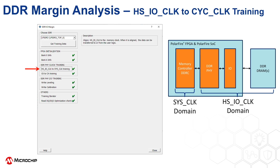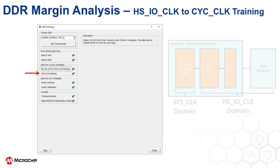Continue by clicking on each topic down the left-hand side of this tool. Next is the result of HSIO clock to SIS clock training. The top of the GUI provides a description of this training step. This step aligns the rising edges of these two clocks so that data can cleanly transfer between the memory PHY and controller clock domains.